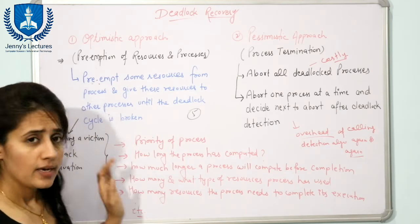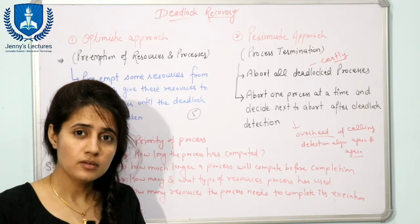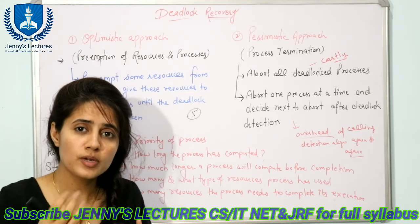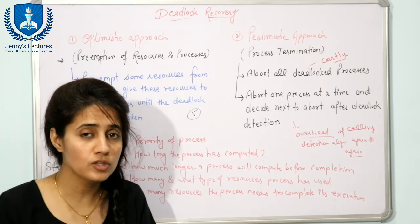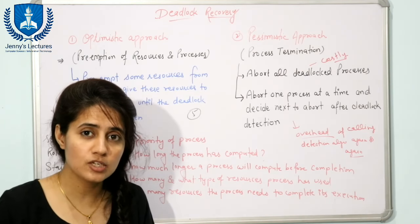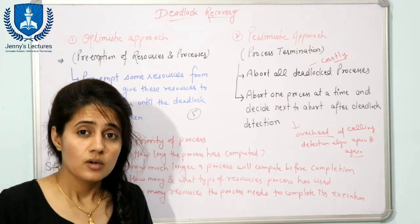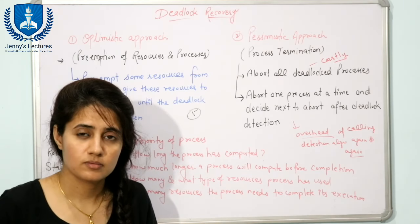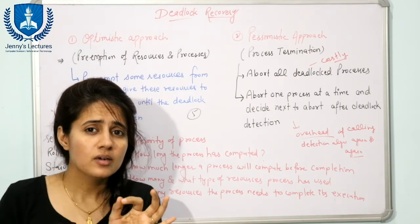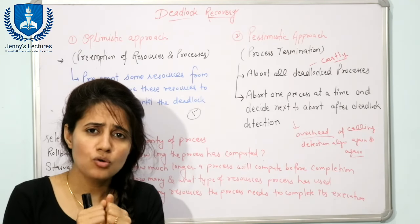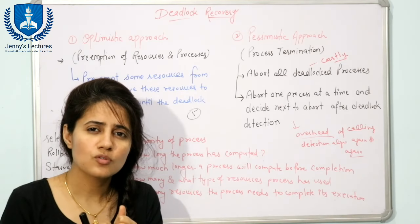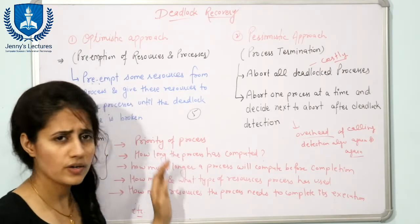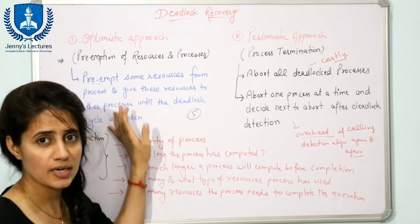The third problem is starvation. If the same process is selected for preemption again and again, it will never be able to complete its execution. The system must ensure a particular process can only be picked as a victim a finite number of times. This can be addressed by including the number of rollbacks as an additional cost factor when selecting a victim.